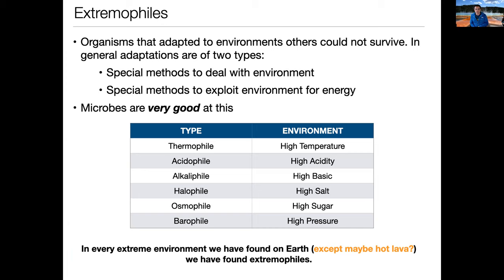In general, when encountering extreme environments we do sometimes see macroscopic organisms like the brine shrimp, but microbes are extremely good at adapting to extreme environments. Their ability to go through experimental generations over and over again until eventually they find one that sticks seems to be the thing that allows them to do that. There are long lists of different extreme environments, and we call the organisms that live in them extremophiles. Here are a few common types: thermophiles like extreme temperatures; acidophiles like high acidity; alkaliphiles like high basic conditions; halophiles like salt; piezophiles like high pressure; and osmophiles like high sugar environments. When we start talking about extreme places in the solar system, we'll come back to these extremophiles.